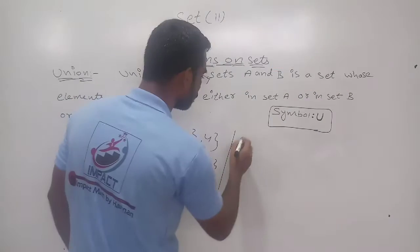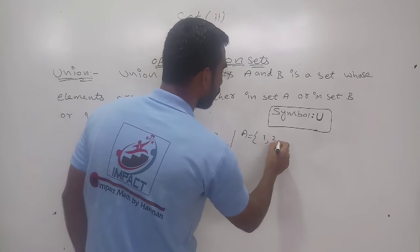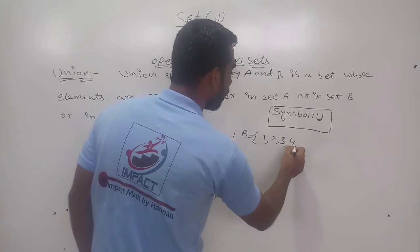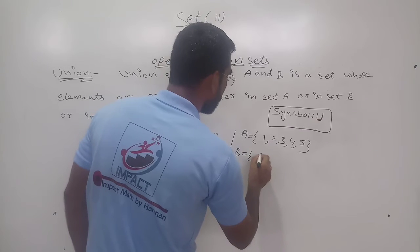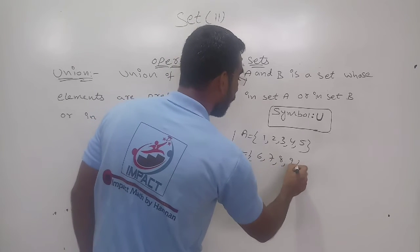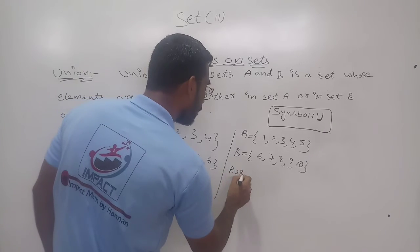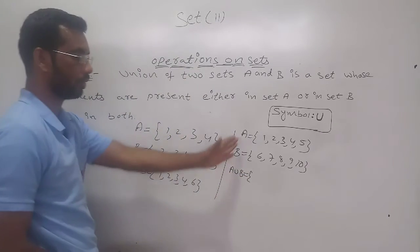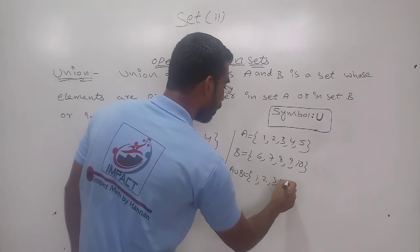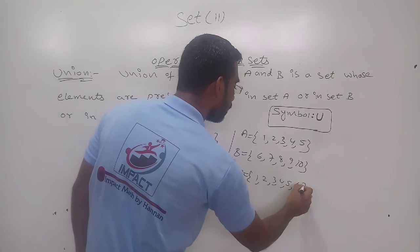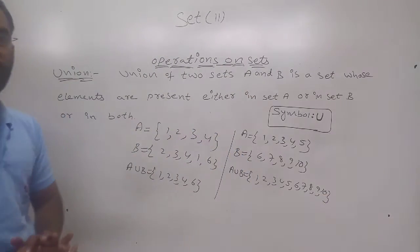One more we will see. A is equal to 1, 2, 3, 4, 5. And B is equal to 6, 7, 8, 9, 10. Then how can you do? A union B is equal to 1, 2, 3, 4, 5, 6, 7, 8, 9, and 10. Total you have to write.